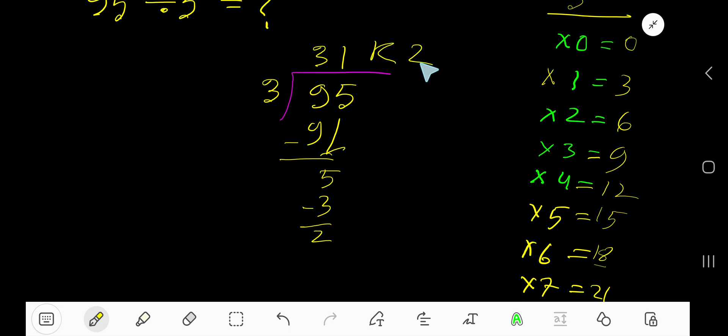But if we want to write our answer in decimal form, then what will happen? Look. Just convert this whole number into decimal number. Take decimal, then add number of zeros. Bring down the first zero.